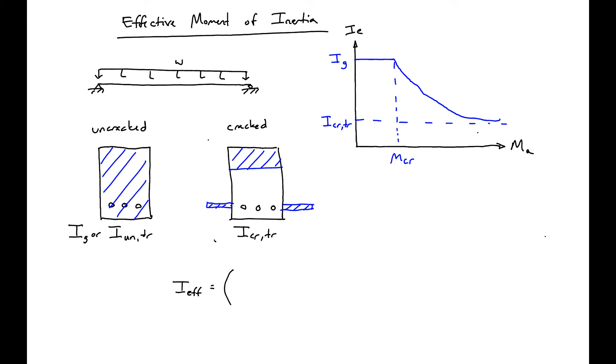The expression for this is MCR over MA, which MA is our applied moment, times the gross moment of inertia, plus one minus MCR over MA to the third times our crack transformed moment of inertia. Using this expression we can get our I effective, and this we can use to find our deflections.